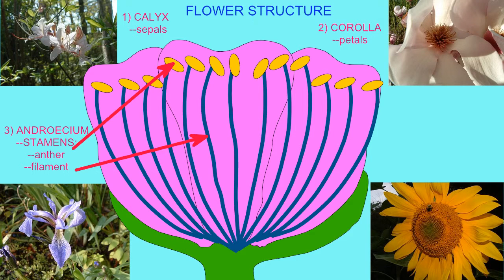Inside the anther, spore mother cells undergo meiosis producing two pollen grains with two nuclei each. They are binucleate.